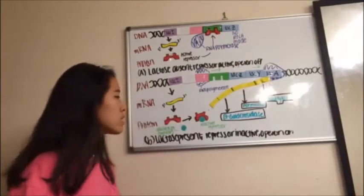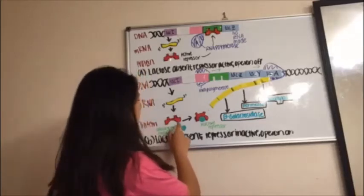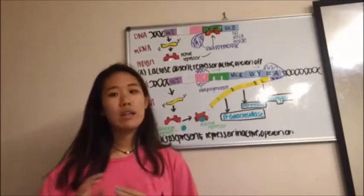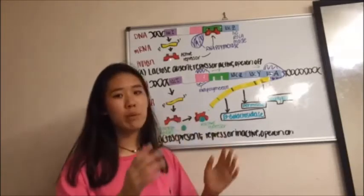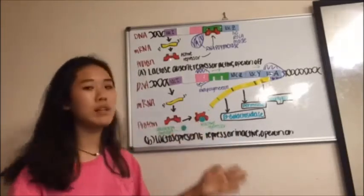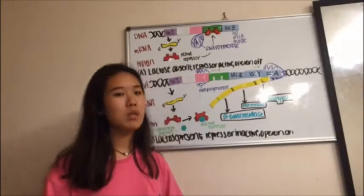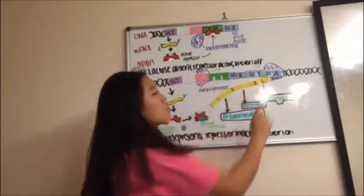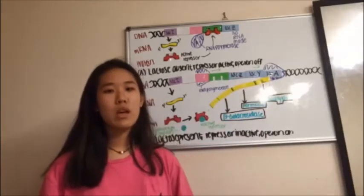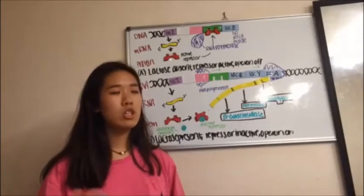However, when lactose is present, the repressor is inactivated by allolactose, as seen here, which is an inducer. This changes its shape into a bent shape, inactivating the repressor, meaning that it is not able to bind to the operator. This allows the pathway to be open for RNA polymerase to travel through, shown by the green arrows, and allows RNA transcription to occur of those genes to mRNA.